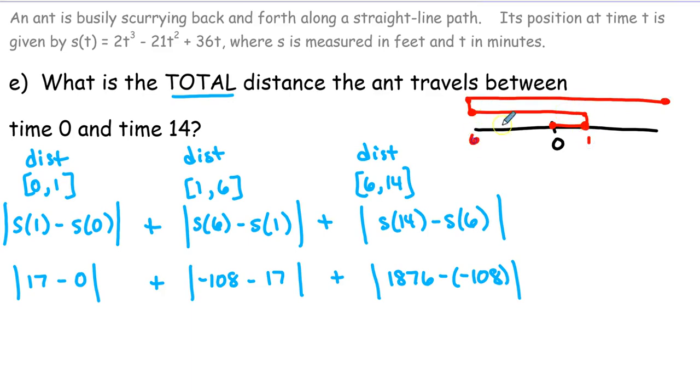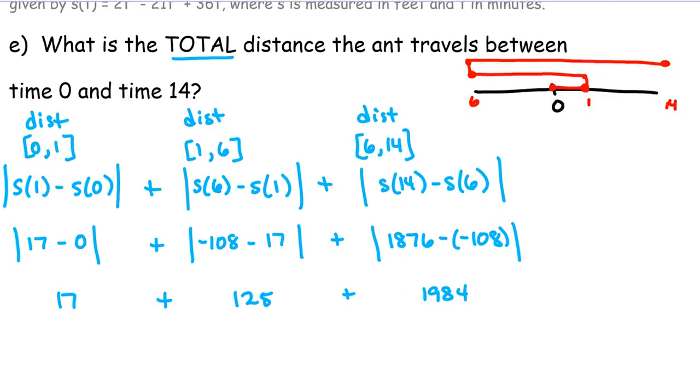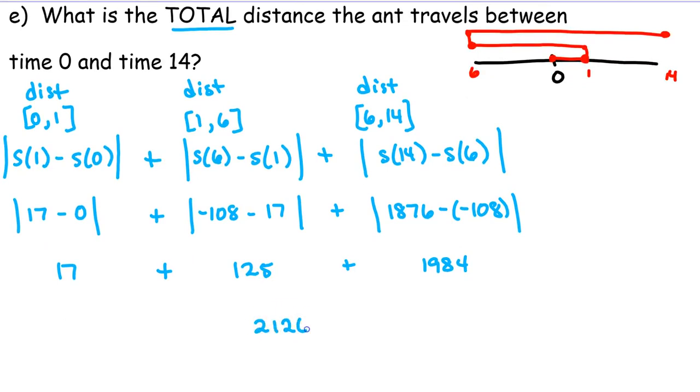Okay, so we just have to finish computing. So this one is 17. And then we subtract and take the absolute value and we get 125. And then we subtract and take the absolute value and we get 1984. Add all those together, and we get 2,126 feet as the total distance the ant traveled in the 14 minute interval we were asked about. Okay, so the thing to keep in mind with total distance is figuring out when the object is at rest, so that you can break it down into intervals, and then make sure to take the absolute value of each of those distances before you add them together.